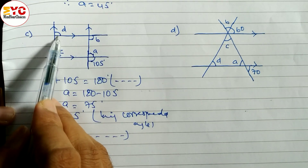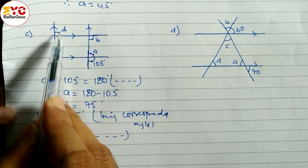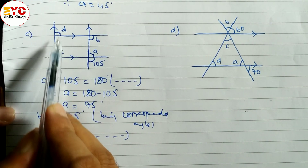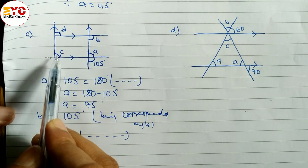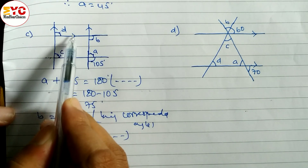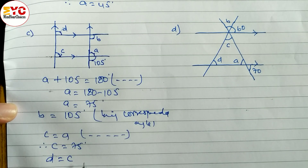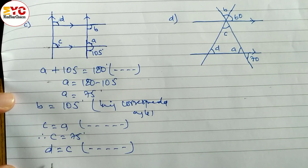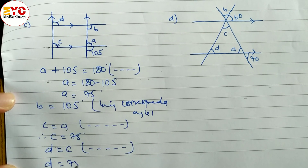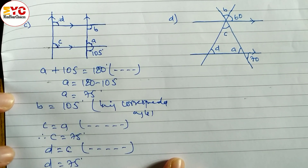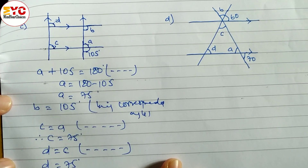Similarly, to find out d: d is equal to c. What is the relation of these two? Being corresponding angle — one is outside, one is inside of these two parallel lines. So we can write d is equal to c, being corresponding angle. So d is equal to 75. Value of d is also 75.